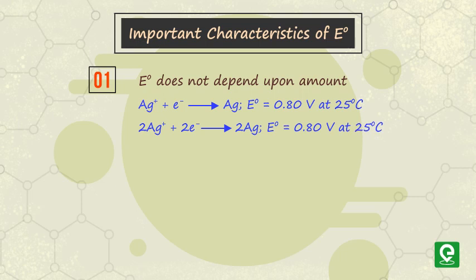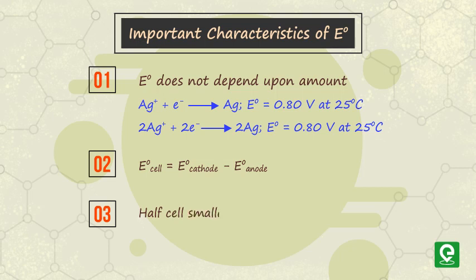Two, in a galvanic cell, E° of cell is equal to E° of cathode minus E° of anode. Three, the half cell with smaller E° constitutes the anode, and the half cell with larger E° constitutes the cathode.